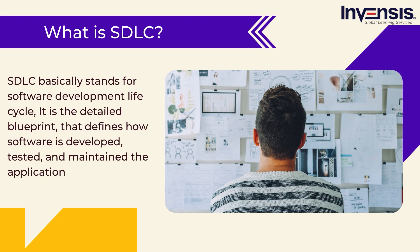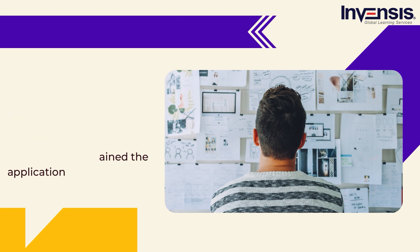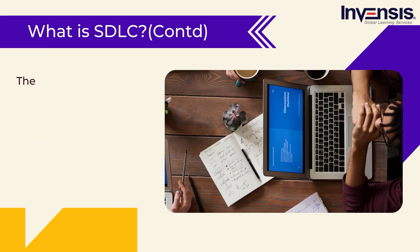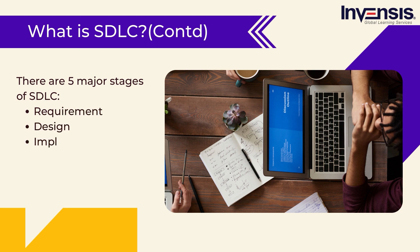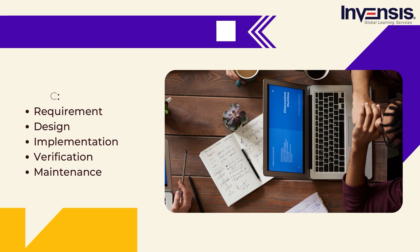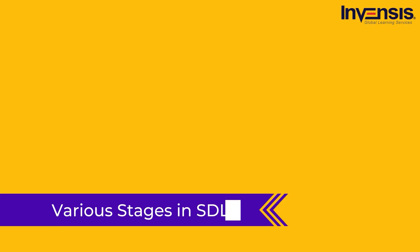Software development has several phases, so let us see the phases involved in SDLC. The phases present in SDLC are: requirement, design, implementation, verification, and maintenance. Now let us start with the phases in detail.